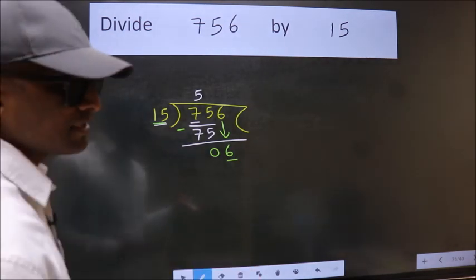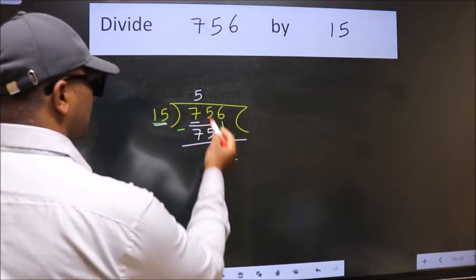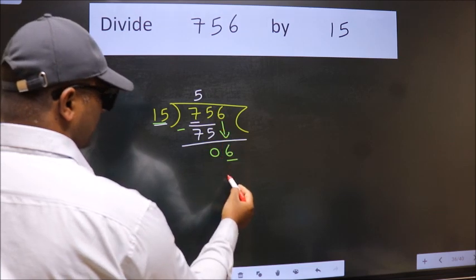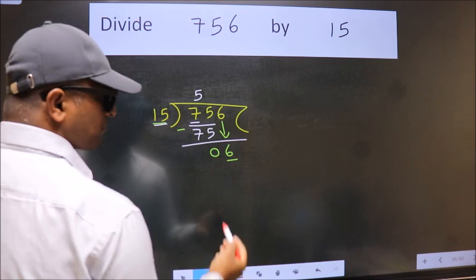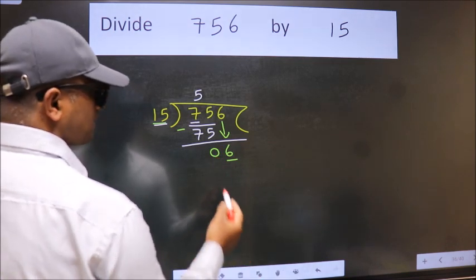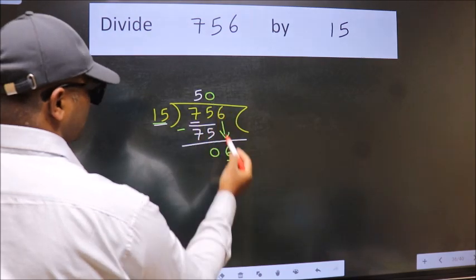What we should think of doing is which number should we take here? If I take 1 we will get 15. But 15 is larger than 6. So what we do is we will take 0 here. So 15 into 0, 0.